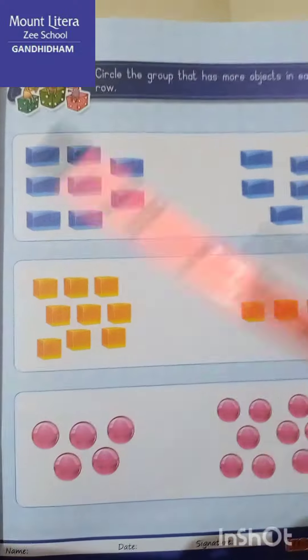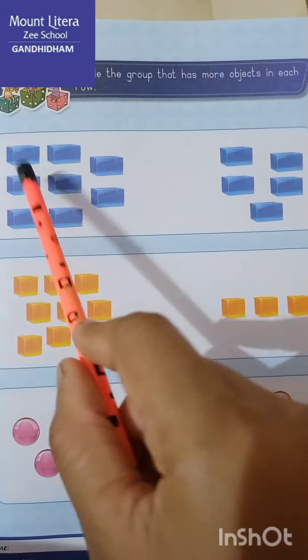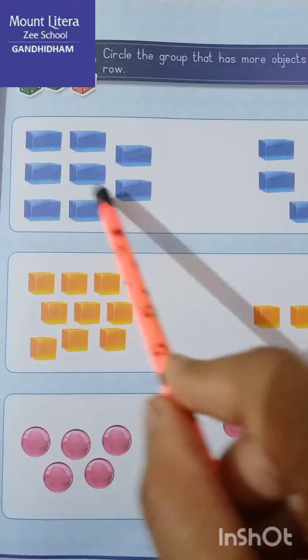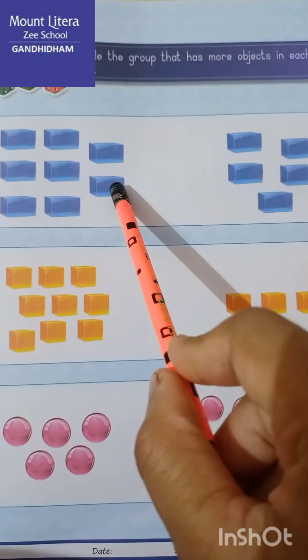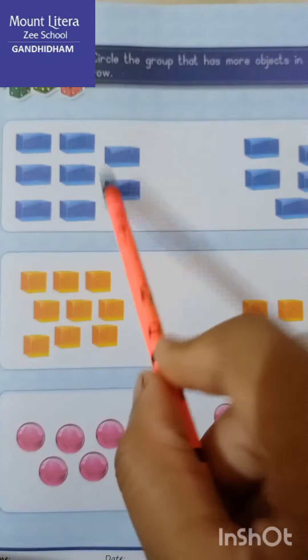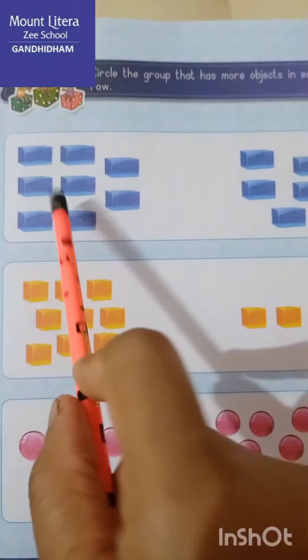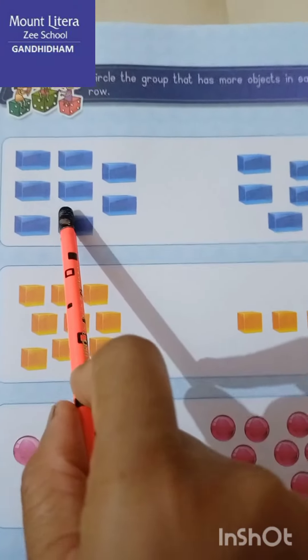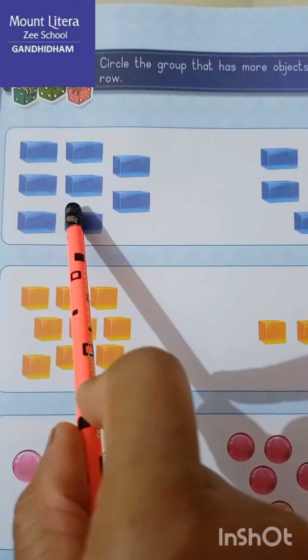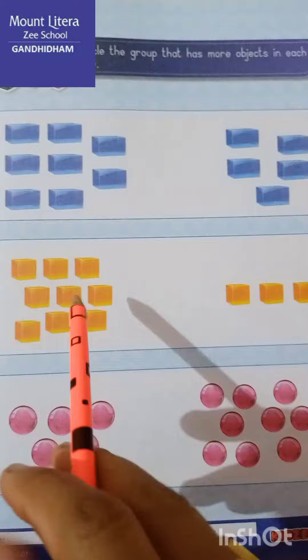So count it, किस group में ज्यादा objects है? 1, 2, 3, 4, 5, 6, 7, 8. This group has 8 objects and this one 1, 2, 3, 4, 5 - 5 objects are there. So this group has more objects, right? So circle on this group, okay. Now next.